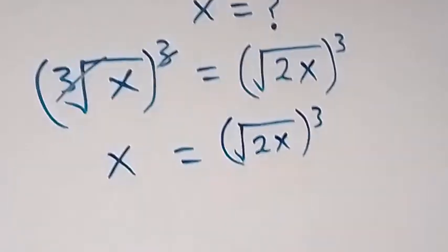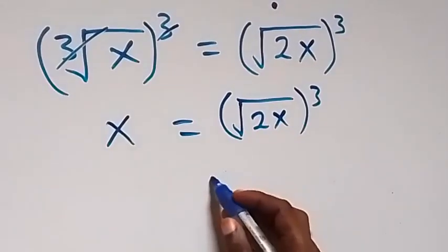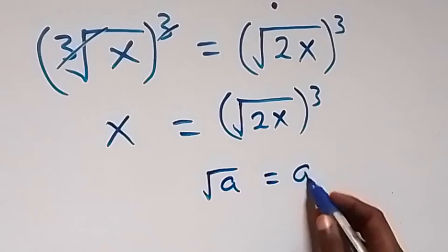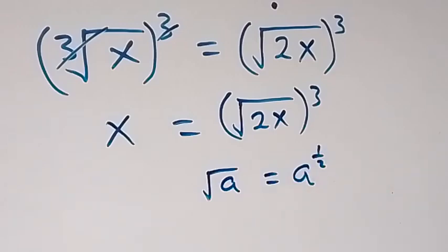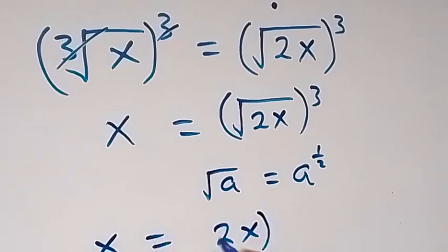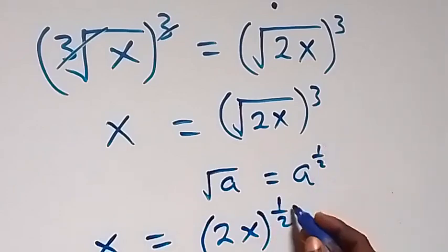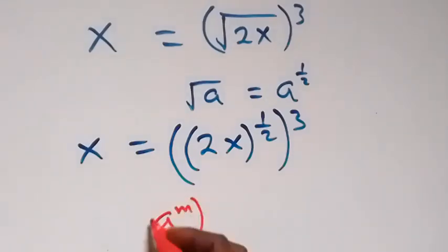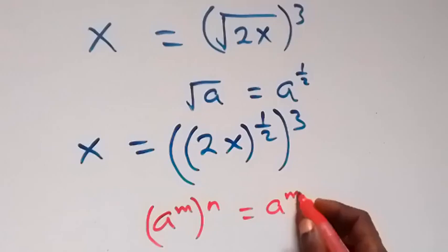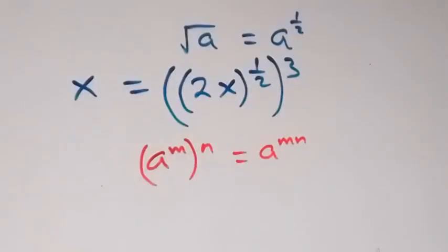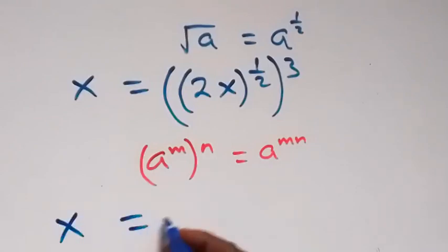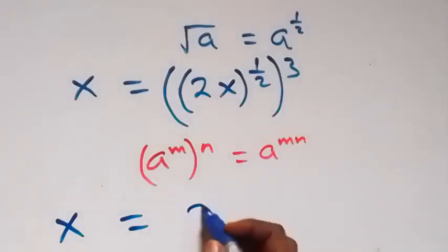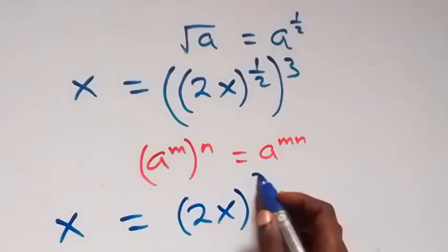We can apply the law of indices, where root A is the same as A raised to power half. So we can write this again as x equals to 2x raised to power half, then raised to power 3. Applying the law where A raised to power m, raised to power n, is the same as A raised to power m times n — the powers multiply — we get x equals to 2x raised to power 3 over 2.